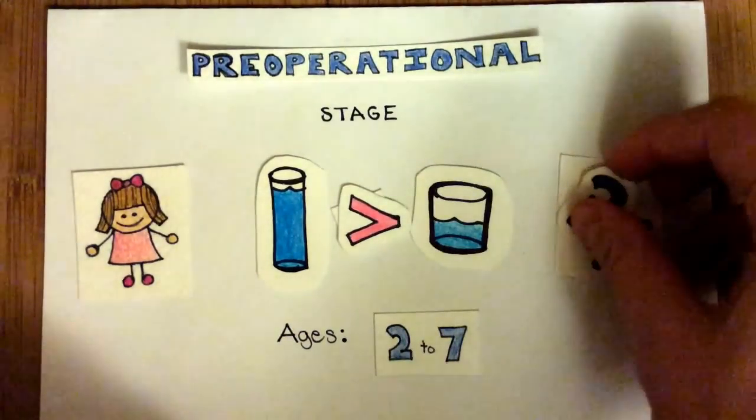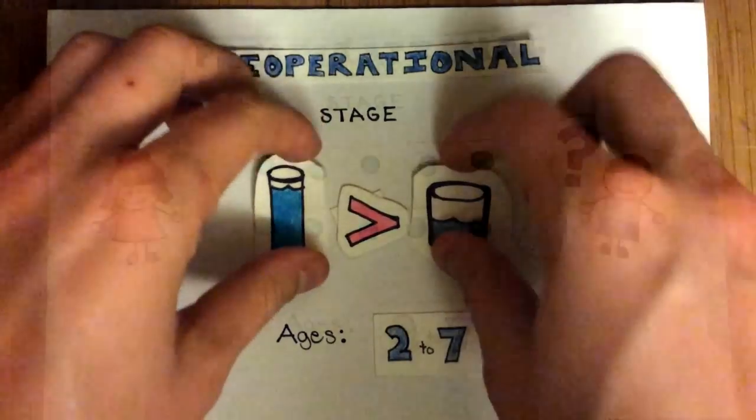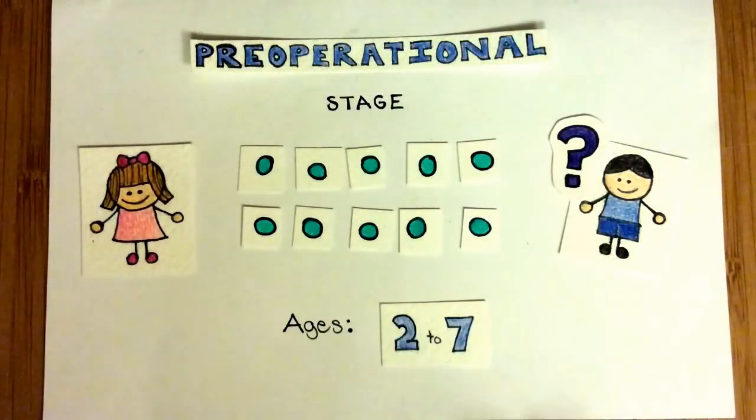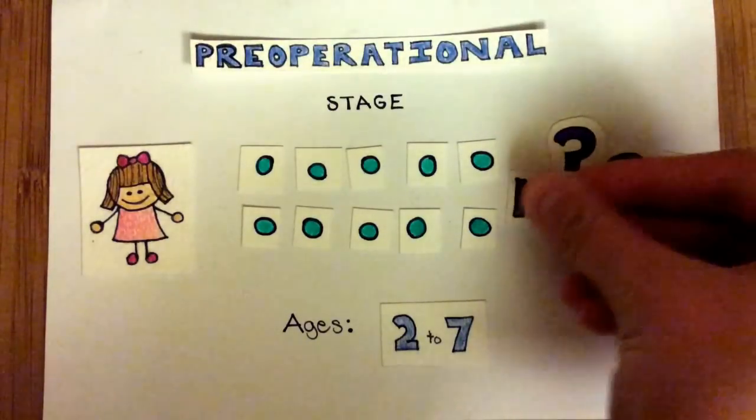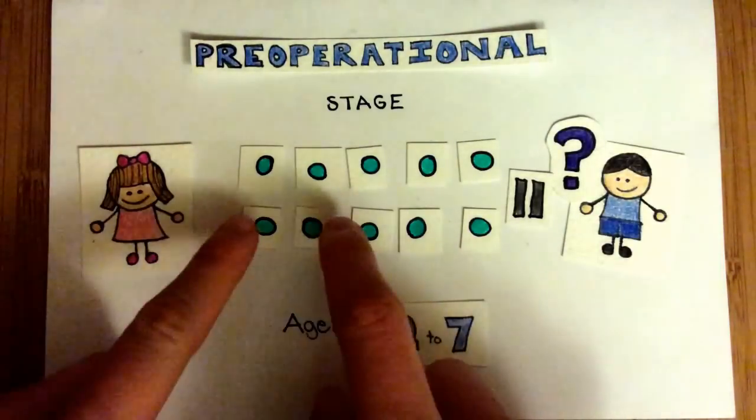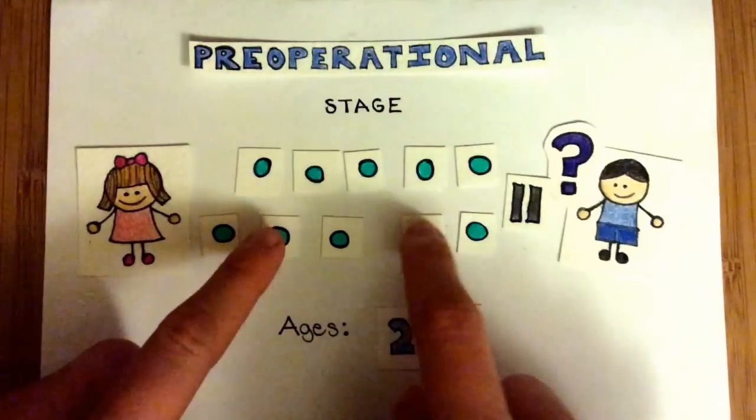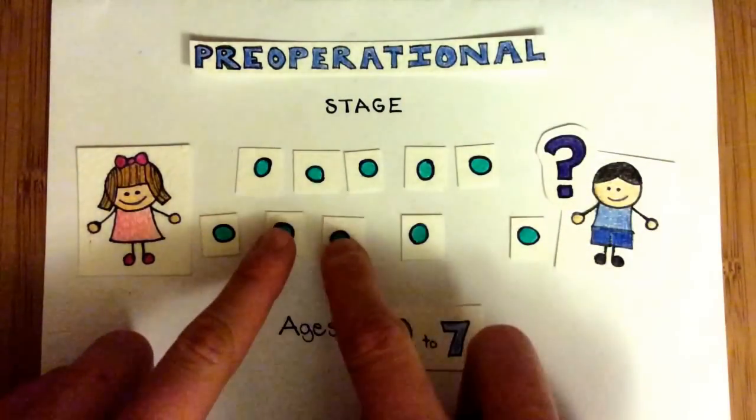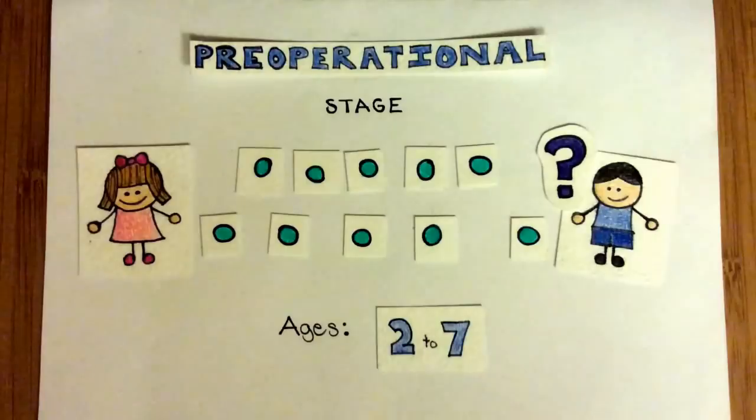A similar phenomenon occurs when testing conservation of number. With this initial presentation, when asked which row has more, the child will tell you that they are equal in number. However, if the experimenter then spreads one row out, the child will tell you that the longer row has more. These findings related to conservation indicate an overall tendency to focus overly on the single dimension of length and to fixate on static states as opposed to dynamic ones.